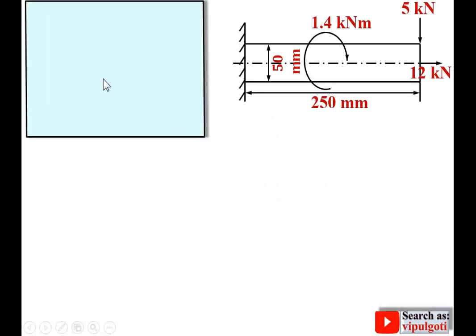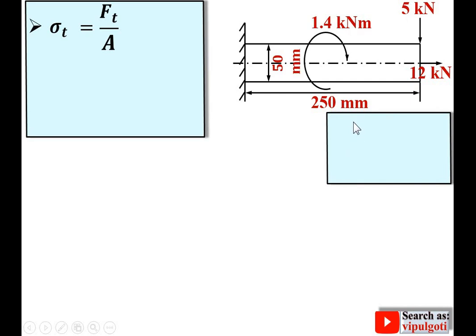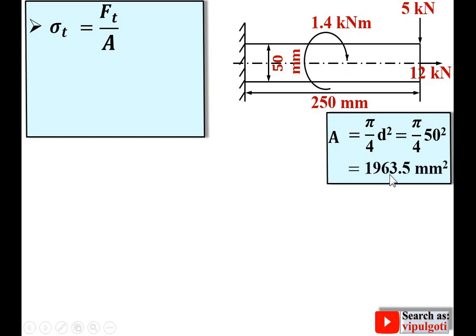Stress is equal to load upon area. For the tensile force FT, the area is the normal cross-sectional area, always perpendicular to the action of the force. For a circular cross section, area A = π/4 × d². With diameter d = 50 mm, simplifying gives area A = 1963.5 mm².